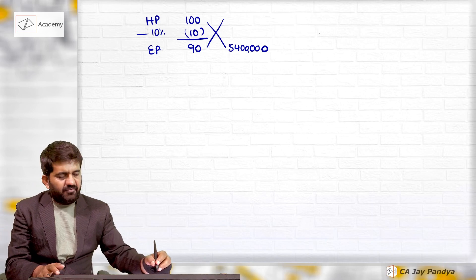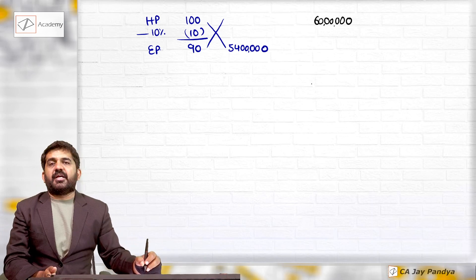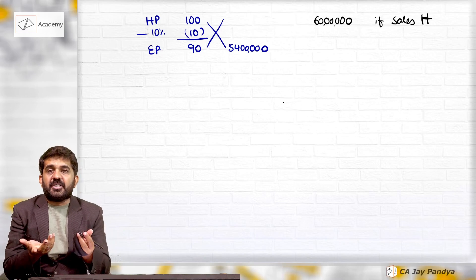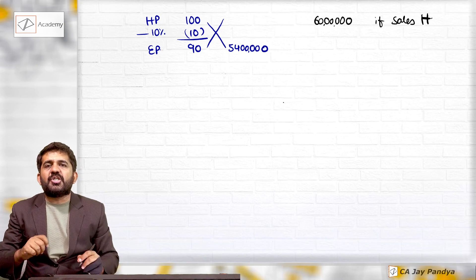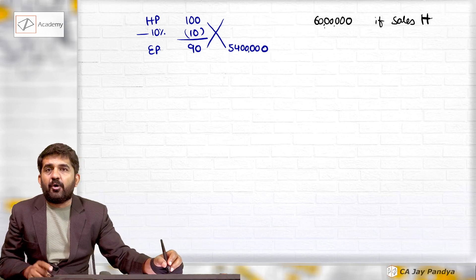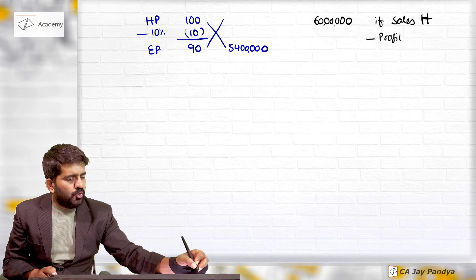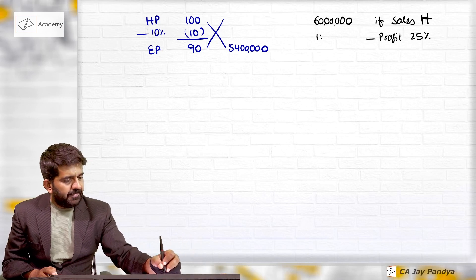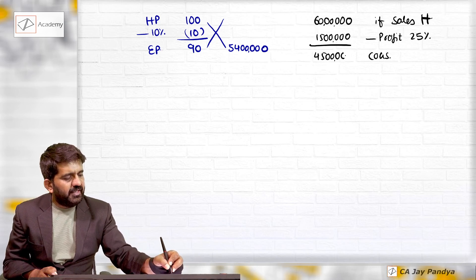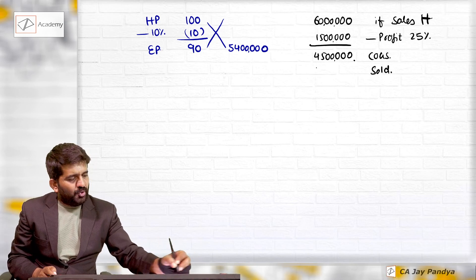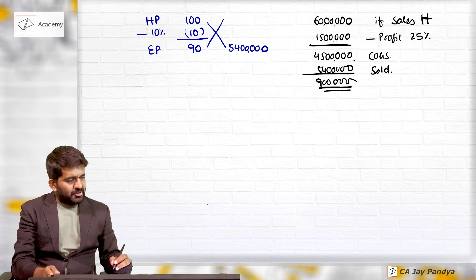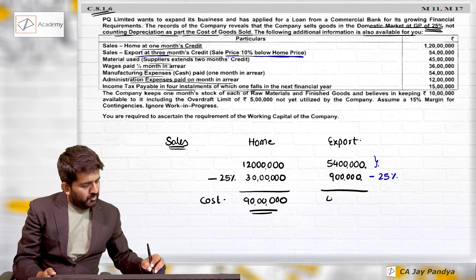Cross-multiplying: if export sales of 54 lakhs were sold at home price, I would have received 60 lakhs. So profit at 25 percent on 60 lakhs would be 15 lakhs, making cost of goods sold 45 lakhs. These goods are actually sold at 54 lakhs, giving a profit of 9 lakhs and a cost of 45 lakhs.